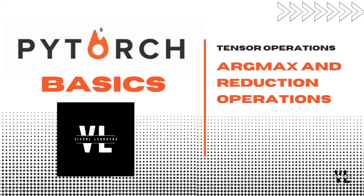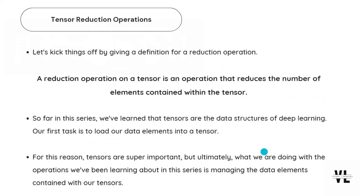Hello guys and welcome back to the PyTorch Basics Tutorial. In this video we're going to talk about the last section of tensor operations called reduction operations. Let's kick things off by giving a definition for a reduction operation. A reduction operation on a tensor is an operation that reduces the number of elements contained within the tensor. So far in this series we have learned that tensors are the data structures of deep learning.